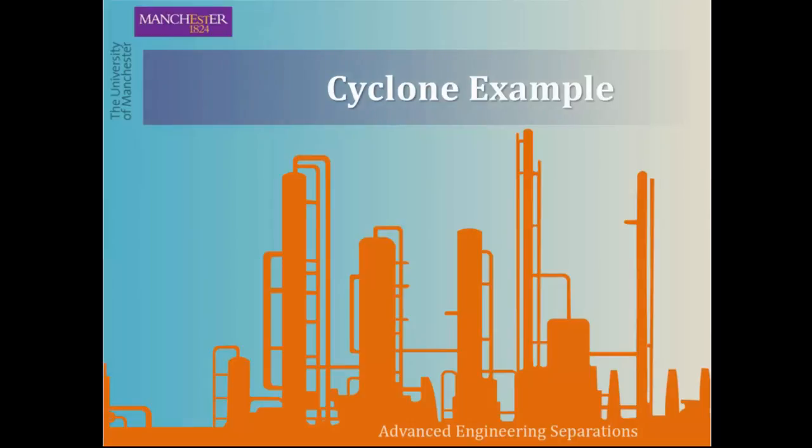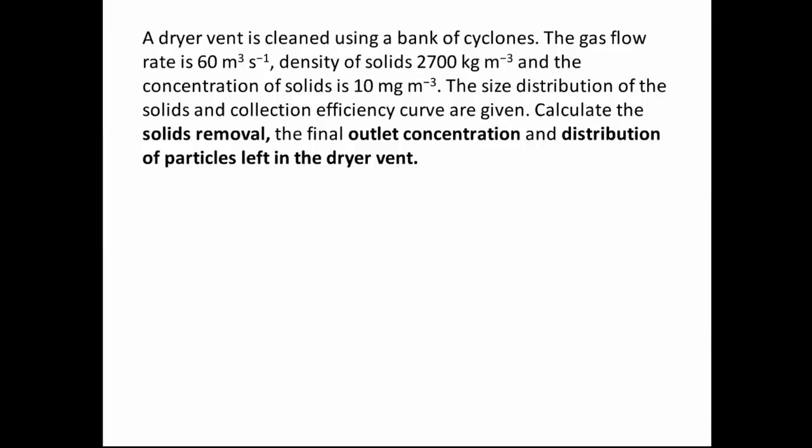In this video we will go through an example on cyclones. The question says that a dry event is cleaned using a bank of cyclones. The gas flow rate is 60 m³ per second, the density of solids is 2700 kg per m³, and the concentration of solids is 10 mg per m³. The size distribution of the solids and the collection efficiency curve are given. We need to calculate the solids removal, the final outlet concentration, and the distribution of particles left in the dry event.